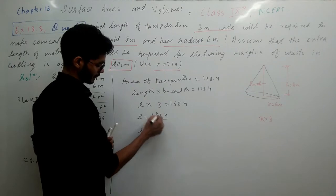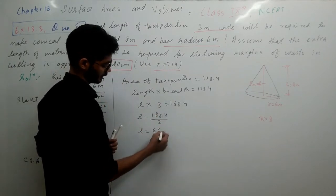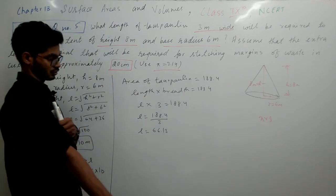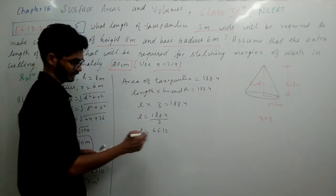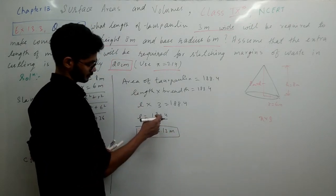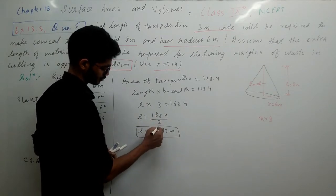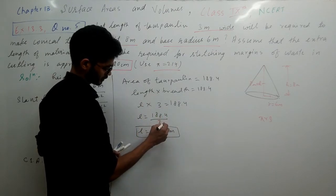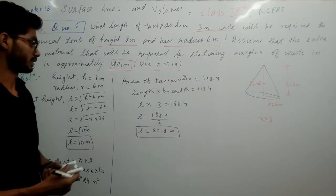So 188.4 divided by 3. Let's solve: 6 threes are 18, 3 twos are 6, and 3 eights are 24. So your length is 62.8 meter.